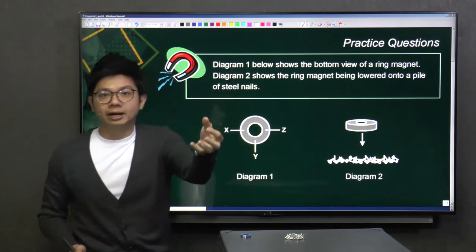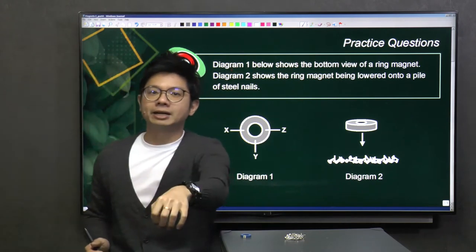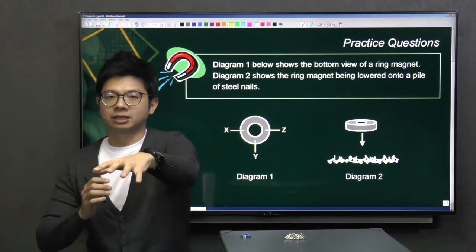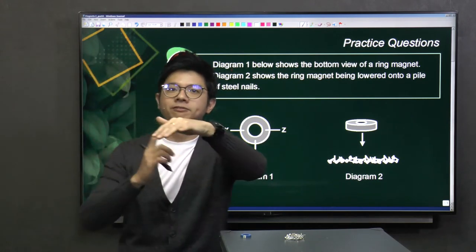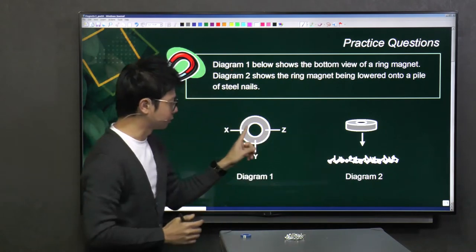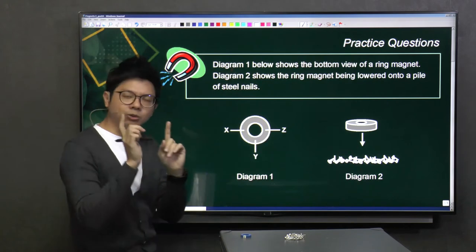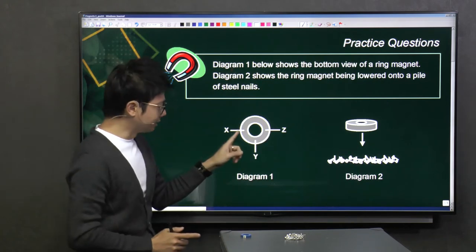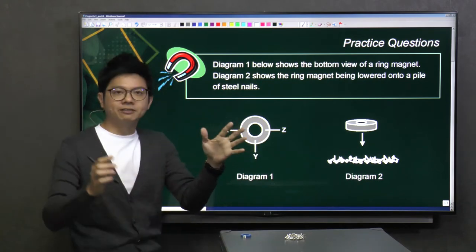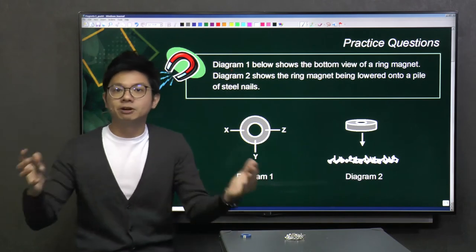So when I lower the ring magnet, is it going to attract the same number of steel nails across X, Y, and Z, or is it different? So basically the question to ask here is: does position X, Y, and Z have the same magnetic strength or do they have different magnetic strength?